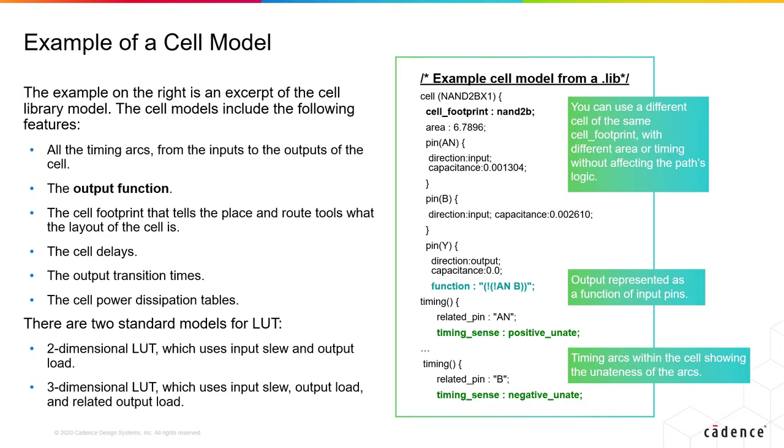Each cell model in the library defines what the cell footprint is, what the area of that cell is, what are the various pins of the cell, what are the directions of the pins, and what is the output function for each output pin. Based on this information, library characterization tools can create cell delay models for you to use at the different slew and load variations.